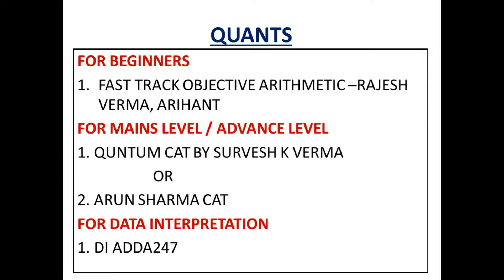If you are in the banking stream and need to prepare for a mains or advanced level, then I will suggest two books — you will have to buy only one. First is Quantum Cat by Sarvesh Kumar Verma, and second is Arun Sharma CAT. These may seem like CAT-level books but they cover advanced level topics. Before doing these two books, you must complete the Arihant book first, and then you can purchase either Quantum Cat or Arun Sharma.